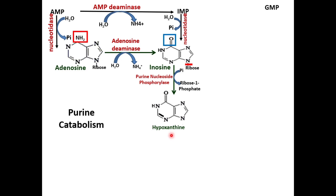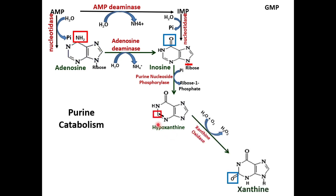Hypoxanthine later forms xanthine with the help of xanthine oxidase. This enzyme contains FAD and iron, and it is exclusively found in the liver and small intestine.